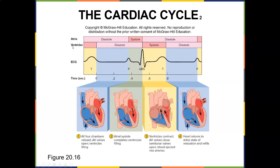Looking at the cardiac cycle: here's the atrium and here are the ventricles. Diastole is rest and systole is contraction. During the first phase all four chambers are relaxed, the AV valves open, and the ventricles fill. Then atrial systole completes ventricular filling. Next the ventricles contract, the AV valves close, the semilunar valves open, and blood is injected into the arteries. Then the heart returns to the initial state of relaxation and fills again.